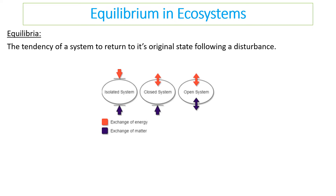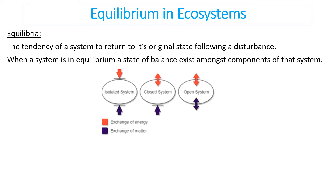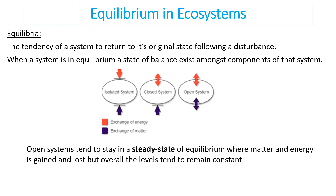This links to equilibria — the tendency of a system to return to its original state following a disturbance. A more complex system is more likely to return to its original state. When a system is in equilibrium, a state of balance exists amongst all components. Open systems tend to stay in a steady state of equilibrium because matter is gained and lost, and the systems tend to stay balanced overall.